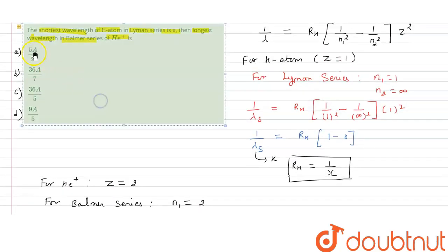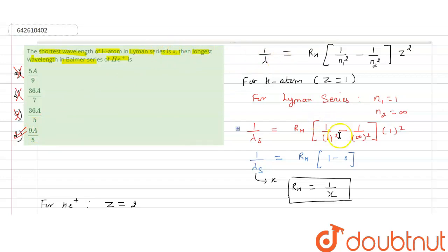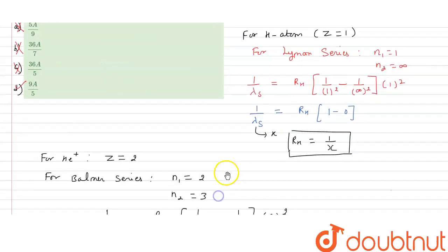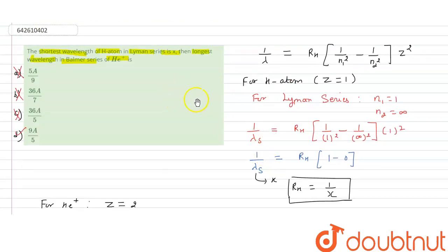Checking the options: option A (5X/9) is not correct, option B (36X/7) is not correct, option C (36X/5) is not correct. Option D is the correct answer. Note that in the question the shortest wavelength is called A instead of X — so substituting A for X, the answer is 9A/5, which is option D. Hope this answered your question. Thank you.